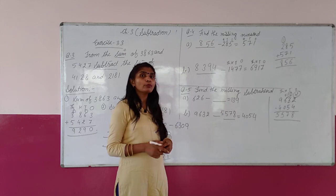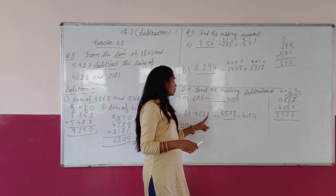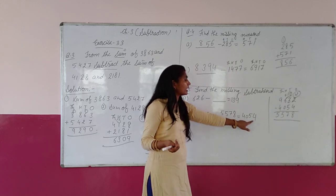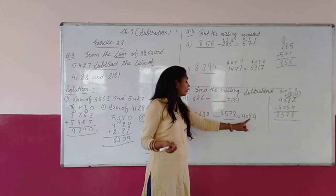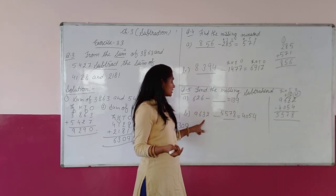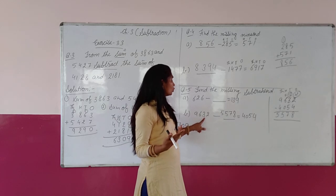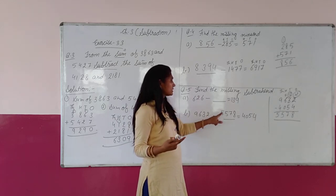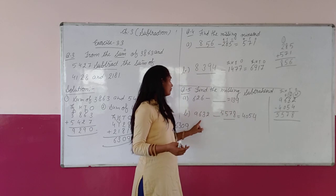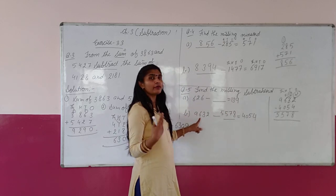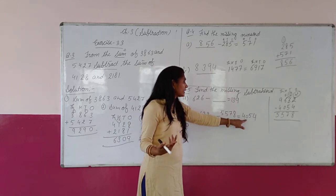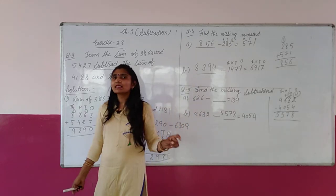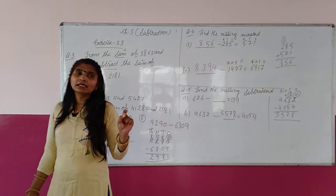Checking करते हैं कि answer correct है: 2 में से 8 subtract नहीं होगा — borrow लो, 12, 12 में से 8 = 4. Borrow लिया था, 3 बन गया 2. 2 में से 7 subtract नहीं होगा — borrow, 12 में से 7 = 5. 5 में से 5 = 0. 9 में से 5 = 4. That means our answer is correct.